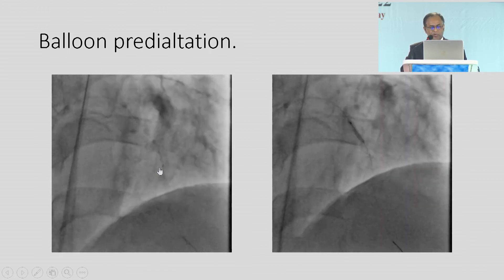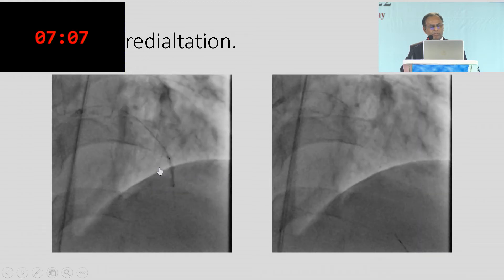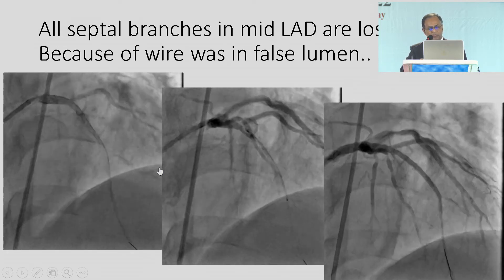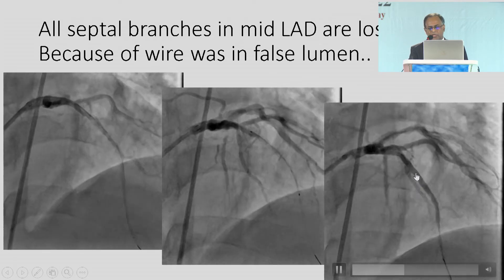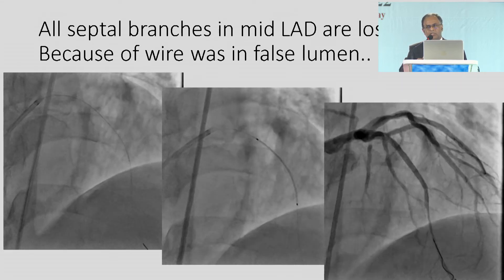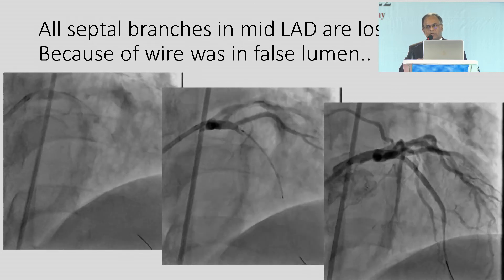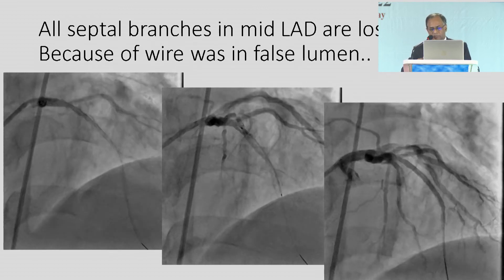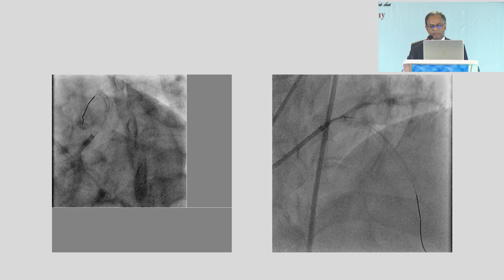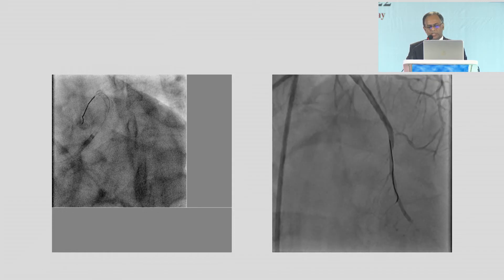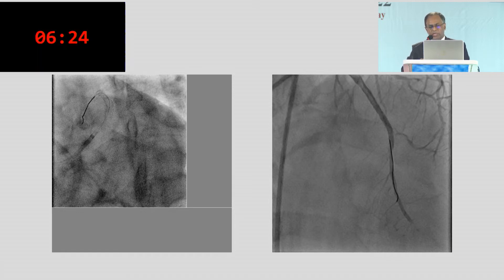I did balloon dilation — first with a smaller balloon, then progressively with a bigger balloon. All the septal branches in the mid and part of the distal LAD were lost. Do you think there is a totally bald area in the mid-LAD? There was a lot of septum initially if you see — all are now lost. The patient developed tachycardia on IV inotropes but was still hypotensive. I placed a stent and did post-dilation. Distal flow improved, but by this time anteroseptal MI had developed due to loss of septal branches in the mid and proximal LAD.